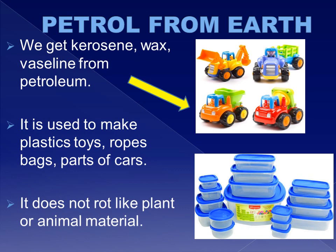We make several things from plastic, like nylon cloths, ropes, toys, bags, TV and radio cabinets, parts of cars, and many other things. Plastics do not rot like plant or animal materials. This is a useful property because things made of plastic will last for a long period of time. But there is a danger in using plastic things.